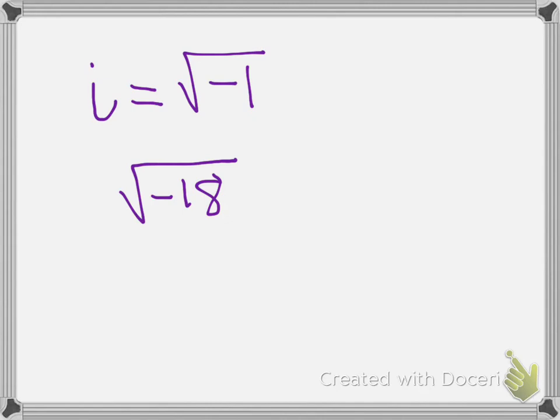So previously we basically lied to you as math teachers when we said you couldn't take the square root of a negative because you can, it's just not a real number, it's an imaginary number. So here's an example with the square root of negative 18. I can rewrite that as the square root of negative 1 times the square root of 9 times the square root of 2.